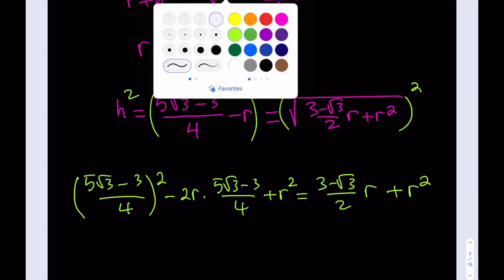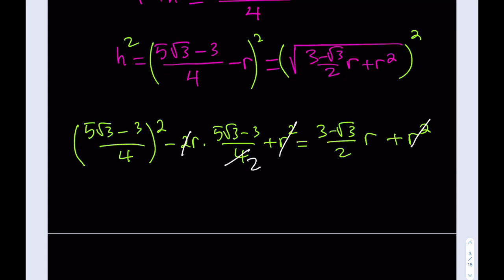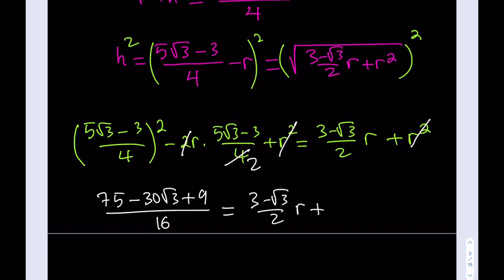R² cancels out, so we end up with a linear expression. We have (84 − 30√3)/16 − (5√3 − 3)/2 · R = (3 − √3)/2 · R. Adding the R terms: (84 − 30√3)/16 = (3 − √3)/2 · R + (5√3 − 3)/2 · R. The negative 3 and positive 3 cancel out, giving (84 − 30√3)/16 = 4√3/2 · R = 2√3 · R.